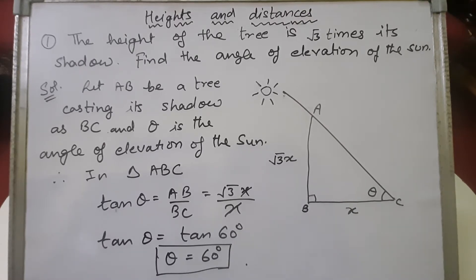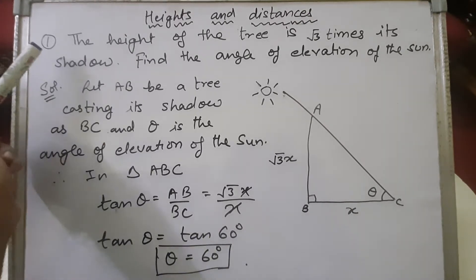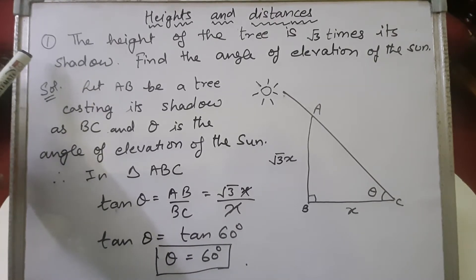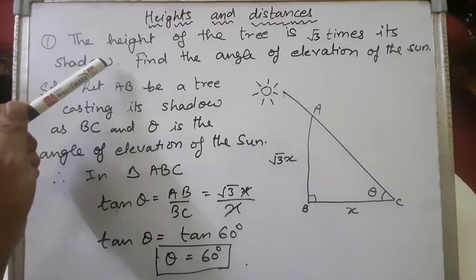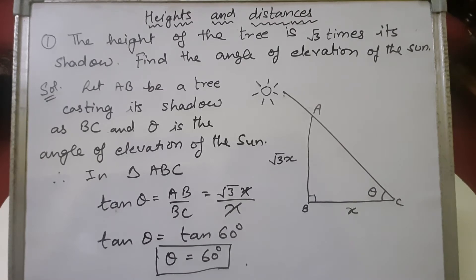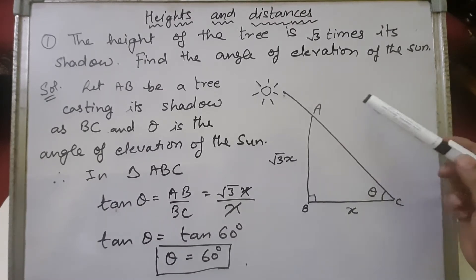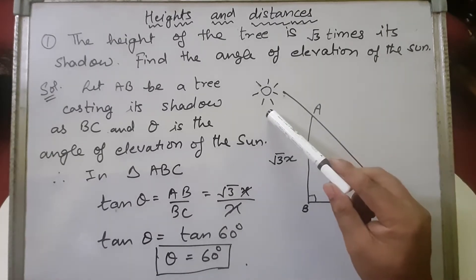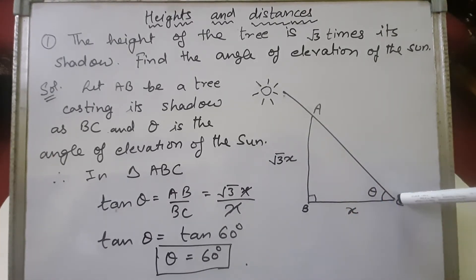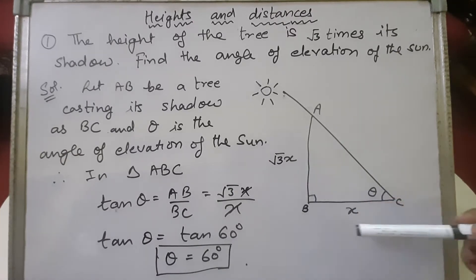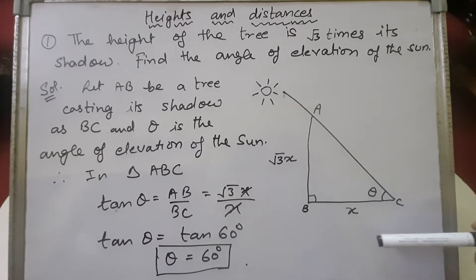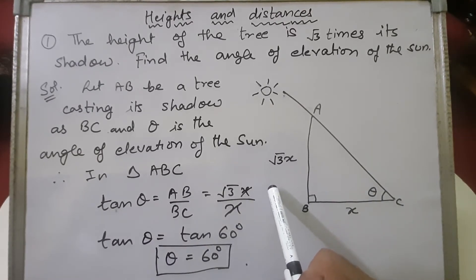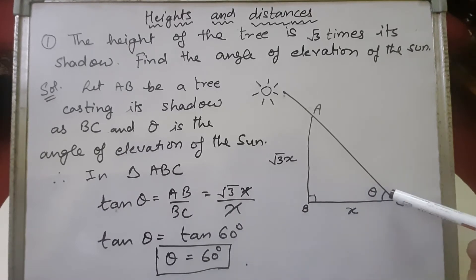Problem 1: The height of a tree is root 3 times its shadow. Find the angle of elevation of the sun. Looking at the diagram, let AB be the tree and BC be the shadow. The sun is on the opposite side, casting the angle of elevation. Since the height is root 3 times the shadow, if the shadow length is x, then the height AB equals root 3x. The angle of elevation is assumed as theta.